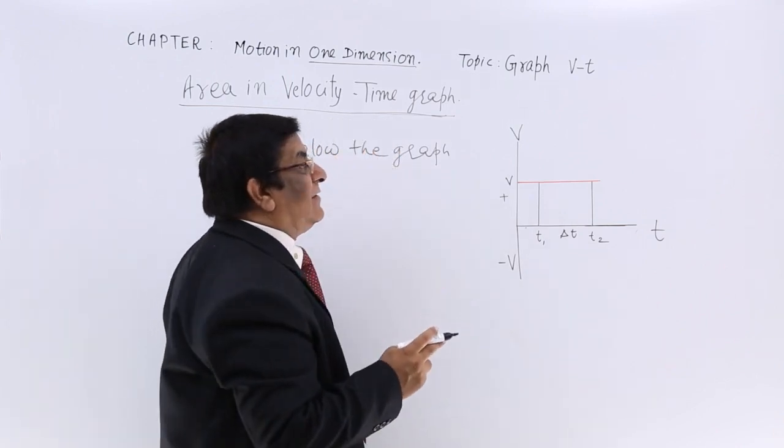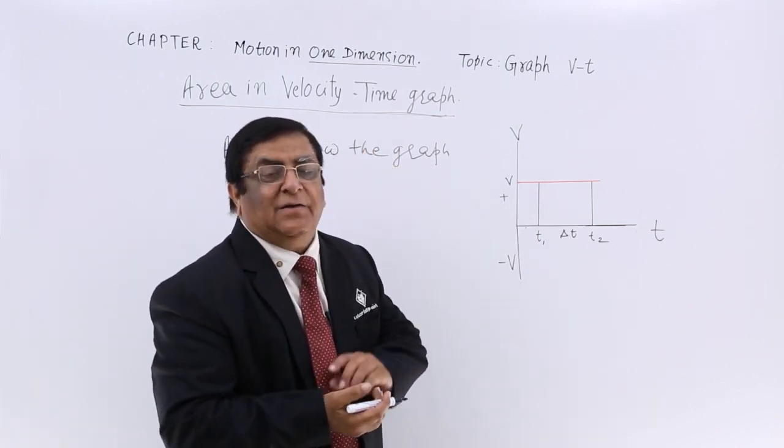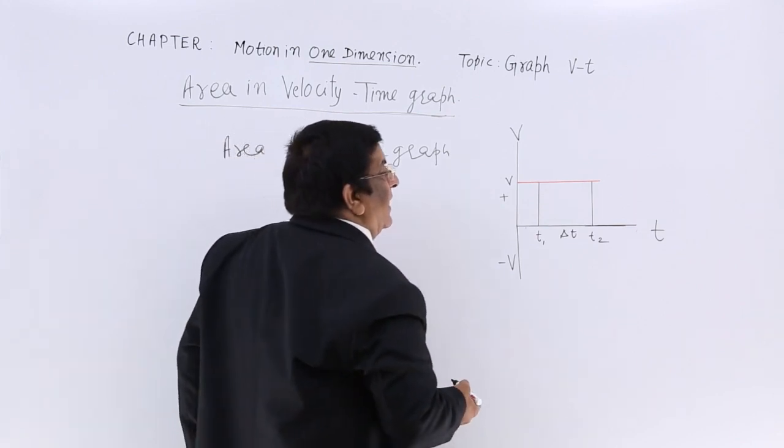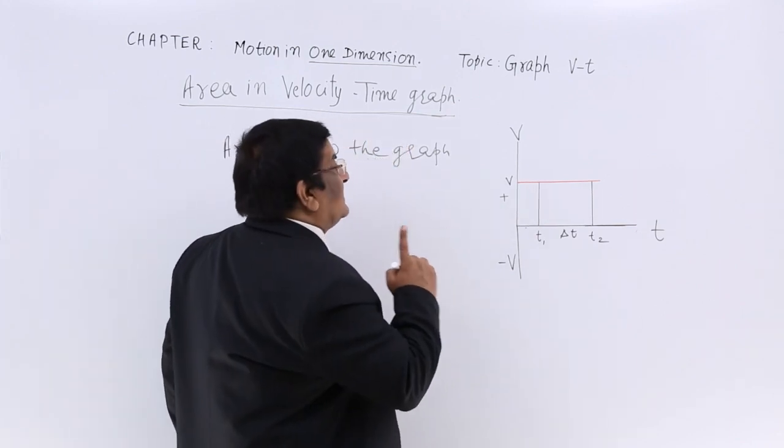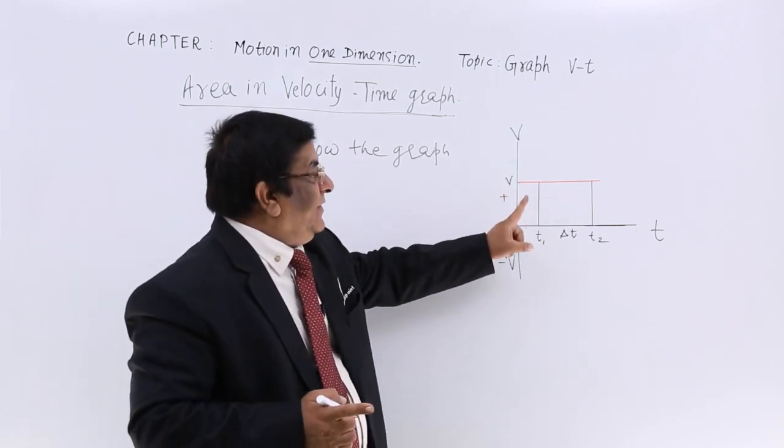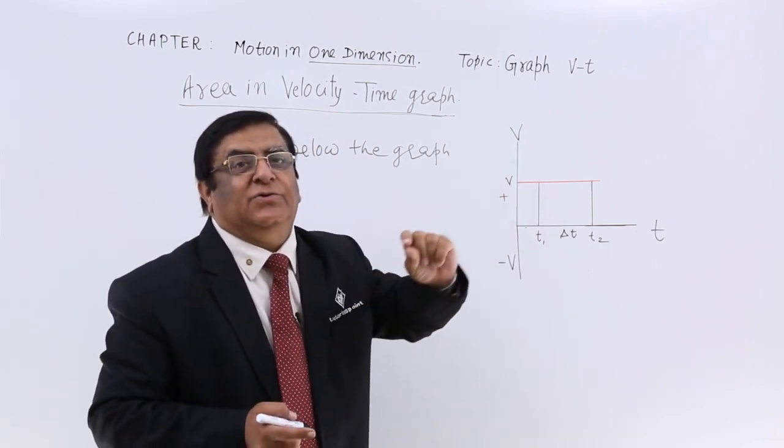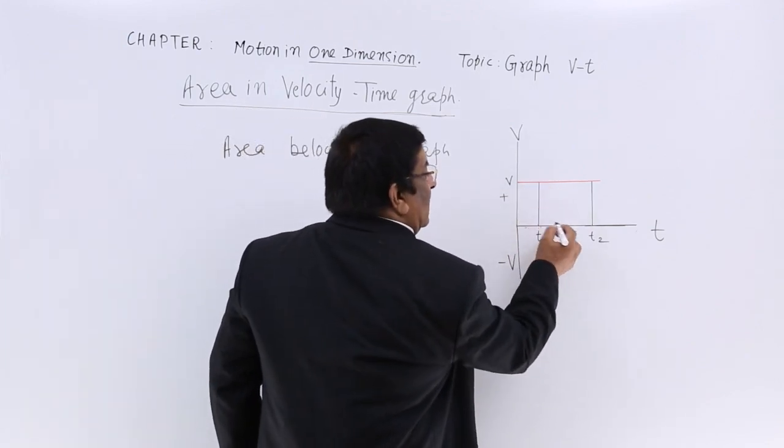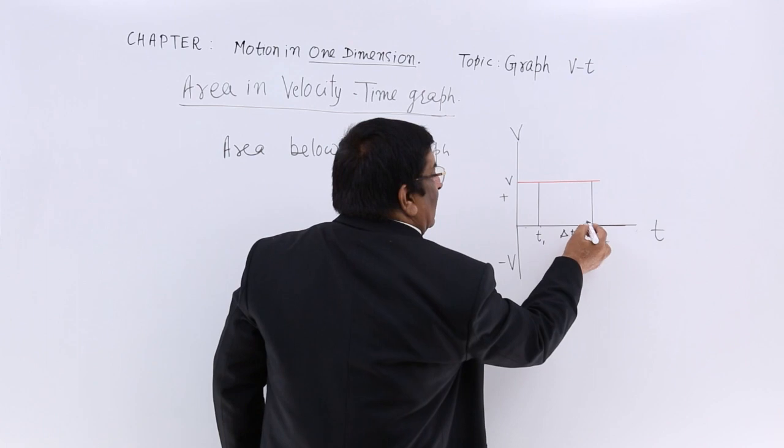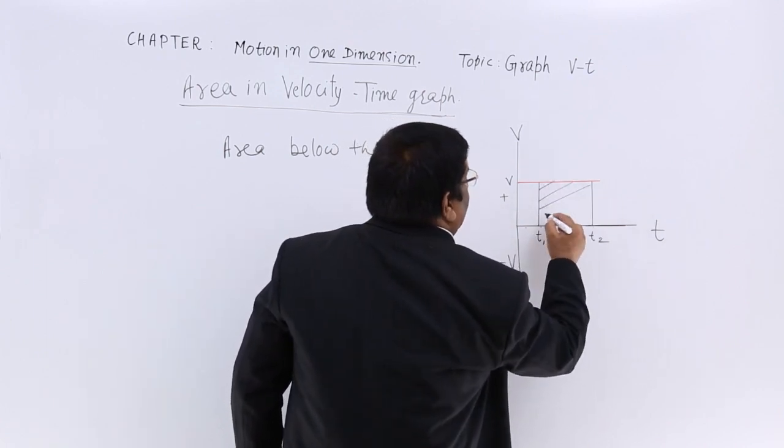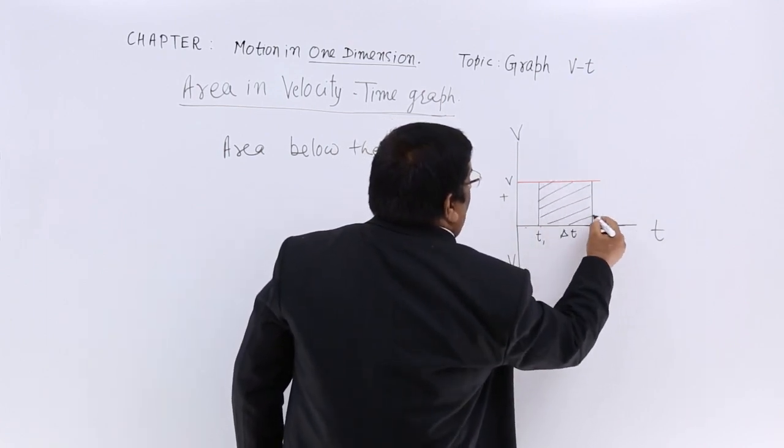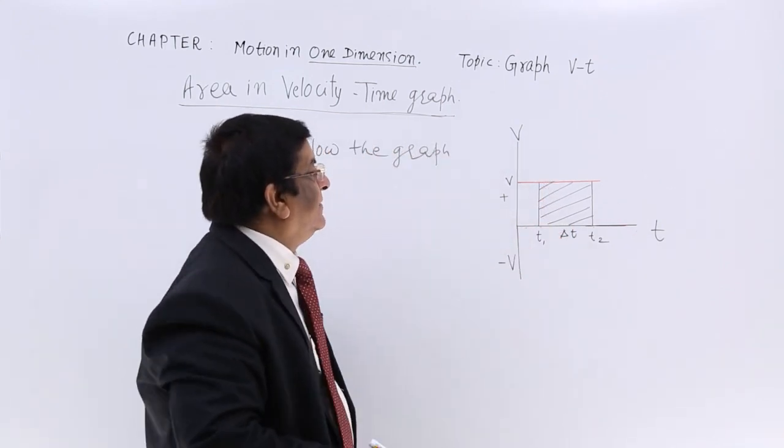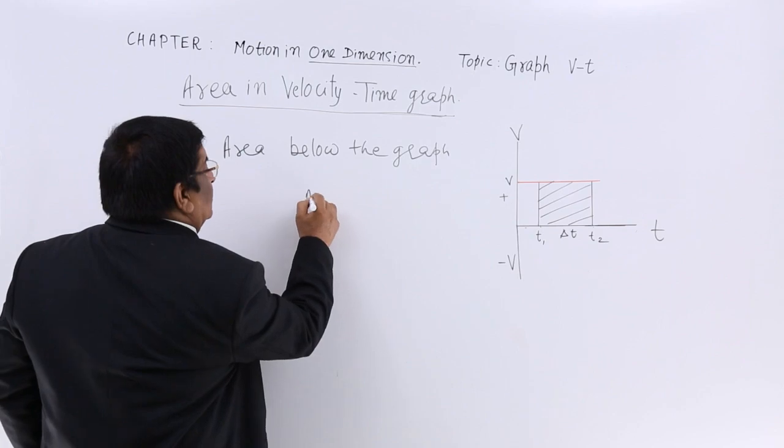Then I can calculate this area between the boundaries of two timings. Let's say I want to ask what is the area covered below the graph from the time t1 to the time t2. So from t1 I write a straight line, t2 I write a straight line and I cover this. This is the area covered by the graph from time t1 to t2.